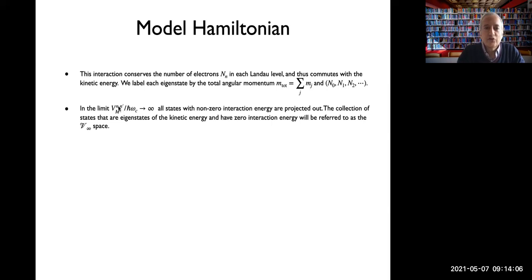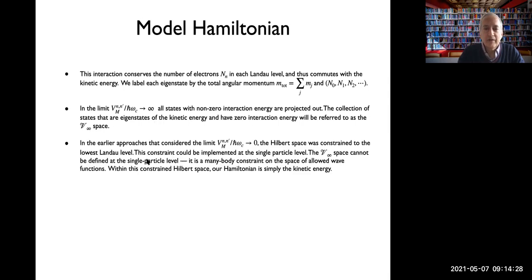Each eigenstate is labeled by total angular momentum and numbers indicating how many particles are in each Landau level. In the limit where pseudo-potentials go to infinity relative to cyclotron energy, all states with non-zero interaction energy are projected out. The collection of states that are eigenstates of the kinetic energy and have zero interaction energy is called the V-infinity space. In previous approaches, the cyclotron energy going to infinity constrained the Hilbert space to the lowest Landau level—a single-particle constraint. The V-infinity space constraint in this work is a many-body constraint on the allowed wavefunctions. Within the constrained Hilbert space, only the kinetic energy remains.